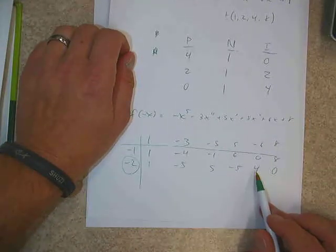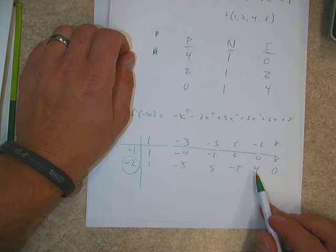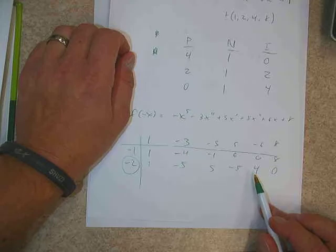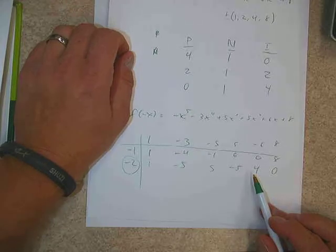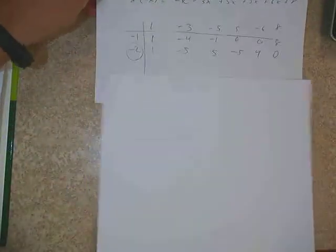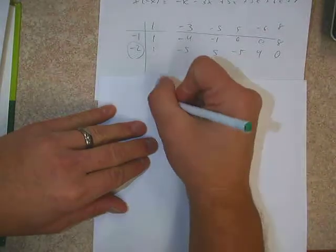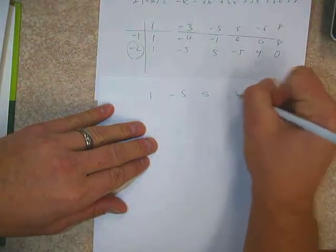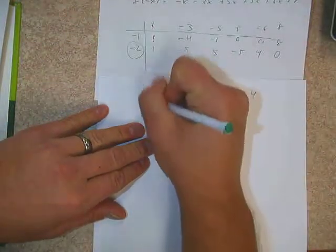What I would do at this point, since we already have one root and we have it broken down into a depressed quartic instead of a quintic, let's use this depressed quartic to do our synthetic division from here on out. That way if we find one more, it's broken down even further already for us, and we don't have to redo a bunch of dividing.